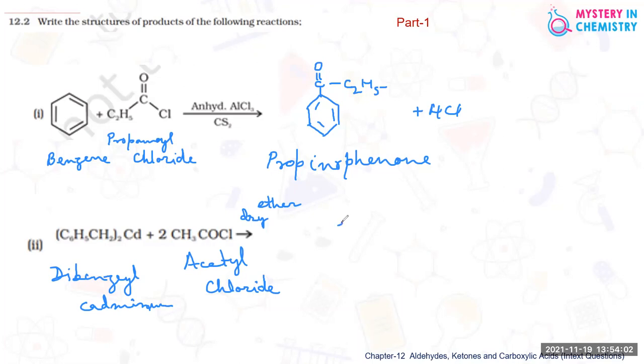In presence of dry ether, this reaction is taking place. The compound which is formed is two molecules of benzene, benzene CH2 C double bond O CH3, and with this, cadmium chloride is the byproduct.